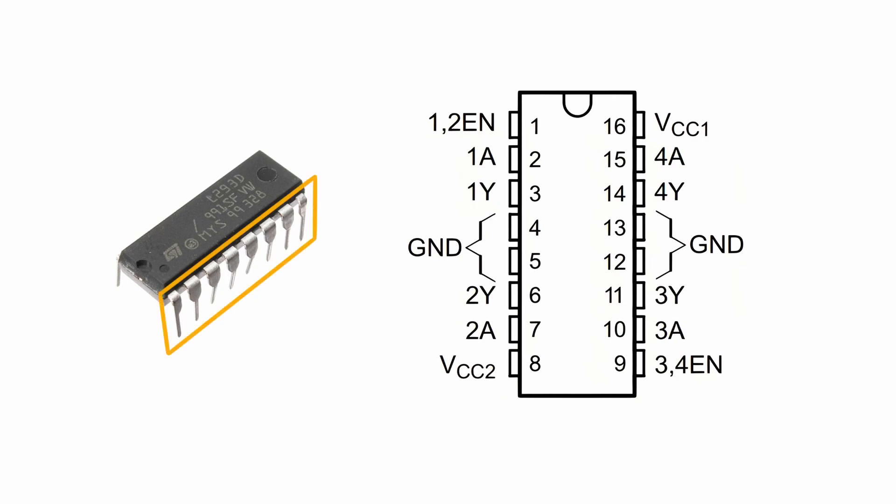As shown in the picture, the metal pins of the L293D chip are neatly arranged on both sides. These pins act as bridges between the integrated circuit and the external circuit, used to transmit signals, provide power, or receive data. Each pin has a specific function to ensure that the chip can interact effectively with external components. The pins are numbered sequentially from 1 to 16.